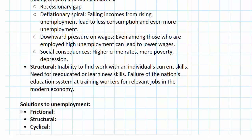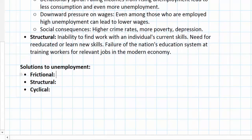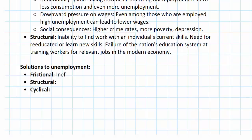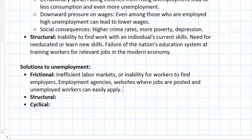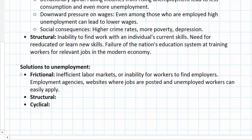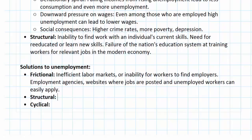What are some ways that government or policymakers can reduce the different types of unemployment? Starting with frictional unemployment: this is a natural type resulting from people being between jobs or entering the workforce for the first time. High frictional unemployment might be evidence of inefficient labor markets or the inability for workers to find employers. Solutions include employment agencies or websites where jobs are posted and people can easily apply. There is no need to train people — we just need to make it easier for people to find firms that are looking for skilled workers.